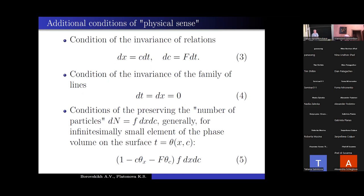So there are three conditions, three additional conditions. The first condition is the condition of the invariance of relations according to Newton's law. This is the relation between these three variables, which should be preserved. Here is another relation using F. The second condition is the condition of the invariance of the family of lines. T equals constant, x equals constant. Why? Because you see here, there is integration on c.